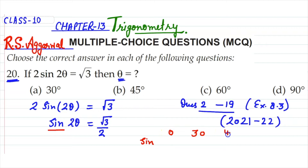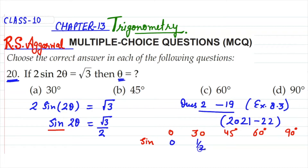This is why I have emphasized the trigonometric table so much. The value of sin 0° is 0, sin 30° is 1/2, sin 45° is 1/√2, sin 60° is √3/2, and sin 90° is 1.